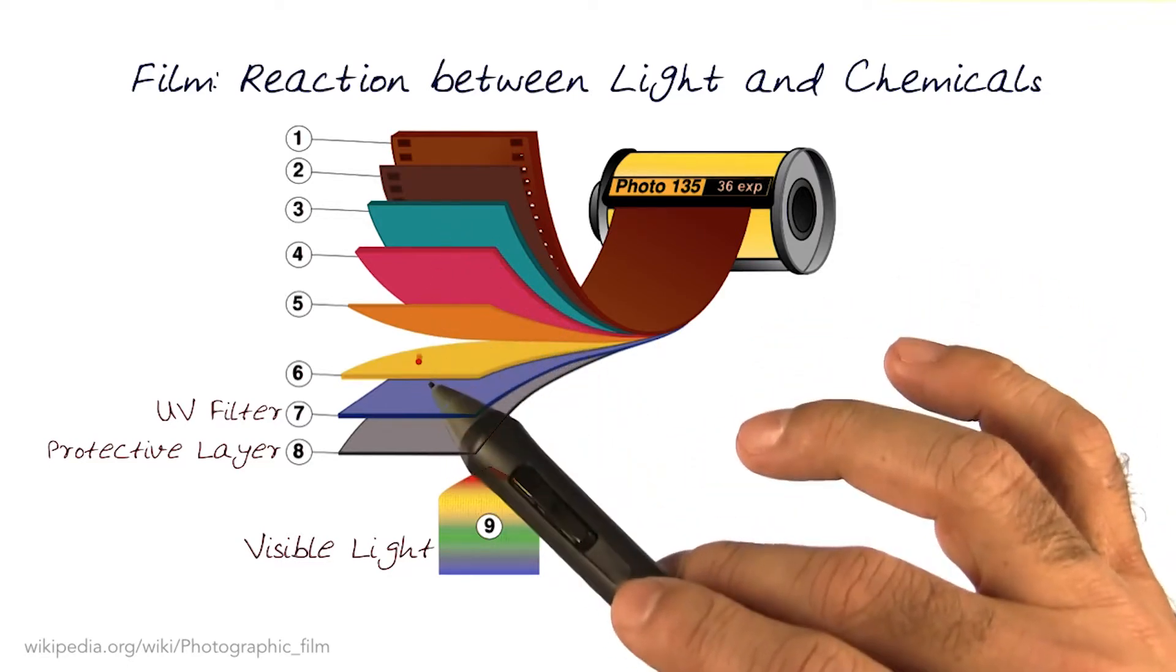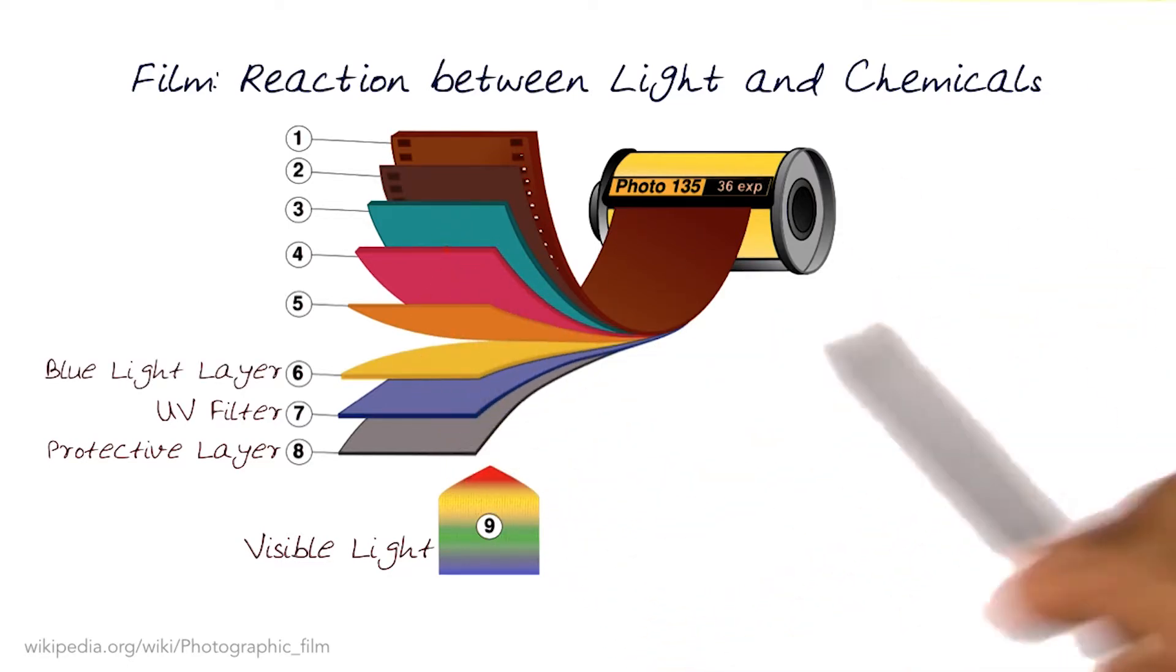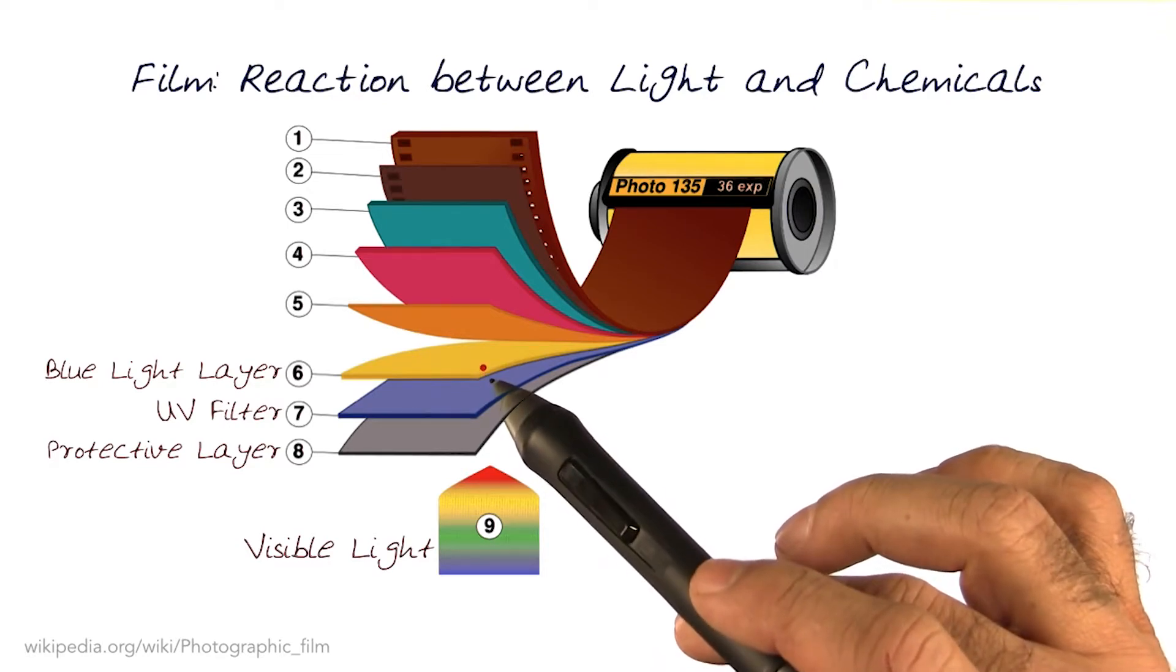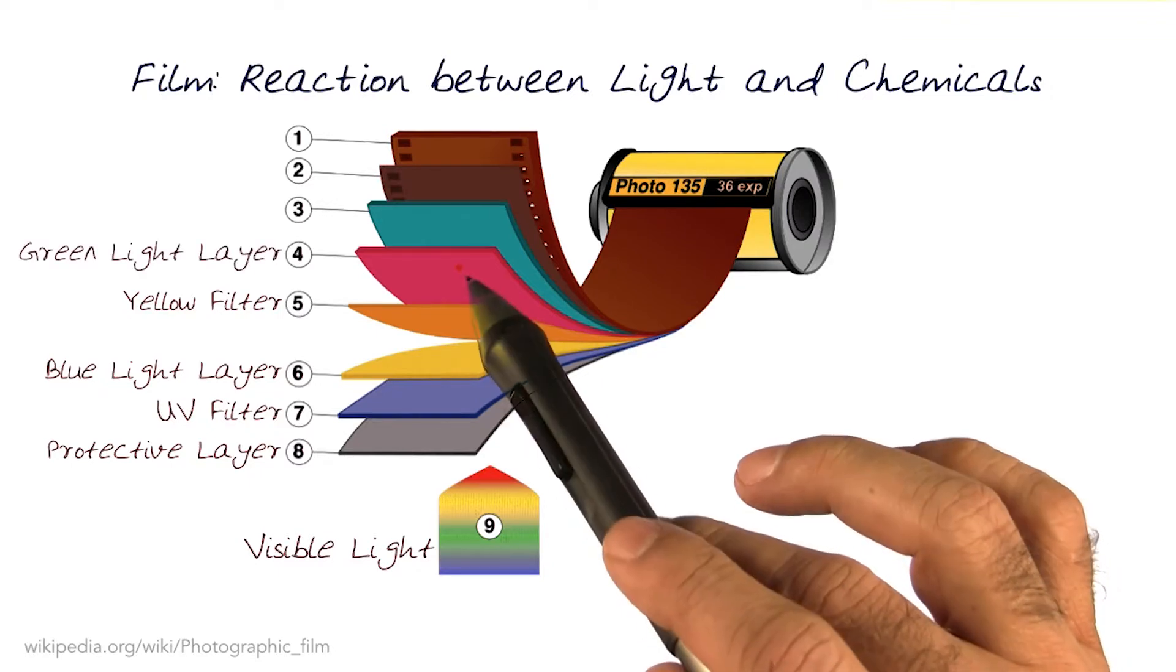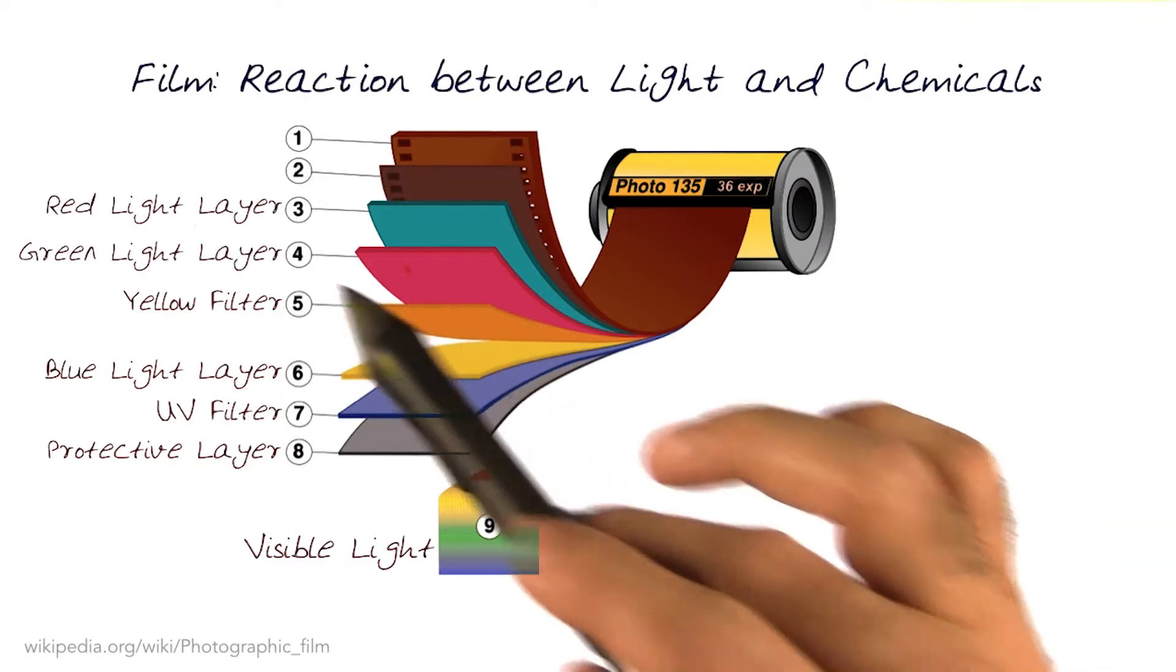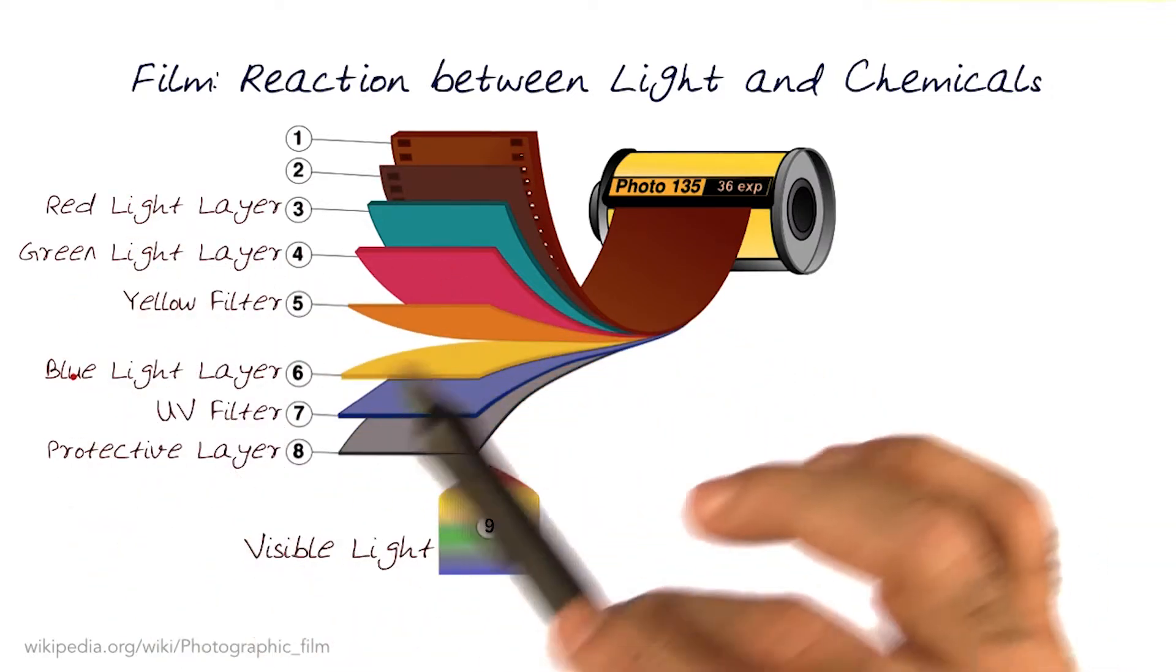The first one when the light hits is a blue light layer. Then a yellow filter is added to get the yellow light out. Green light layer. Red light layer. So we have green, red, and blue lights.